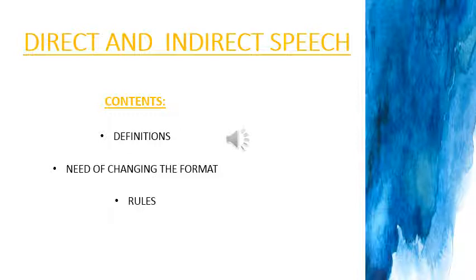In fiction writing, direct speech is usually used to display the emotion of an important scene in vivid detail through the words themselves, as well as the description of how something was said. In non-fiction writing or journalism, direct speech can emphasize a particular point by using a source's exact words — the exact words of a speaker are used to emphasize the point.